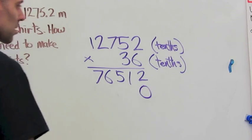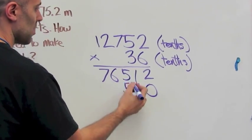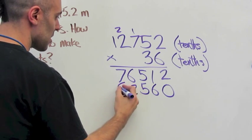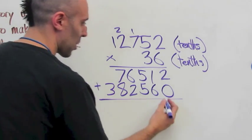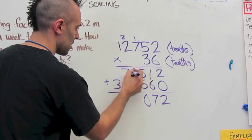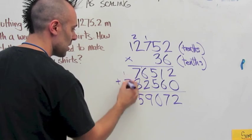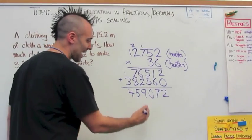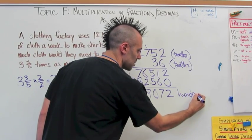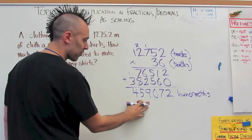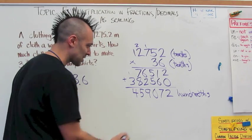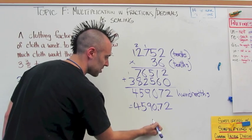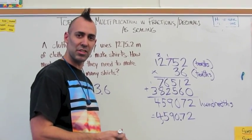I'll hold my place value with a zero. Three times two is six, three times five is fifteen, three times seven is twenty-one plus one is twenty-two, three times two is six plus two is eight, three times one is three. Adding the two partial products: nine and seven plus eight is fifteen. Now, tenths times tenths equals hundredths. Therefore my answer is four hundred fifty-nine thousand seventy-two hundredths. Written as a decimal, the decimal point goes between the zero and the seven, giving four thousand five hundred ninety point seventy-two.